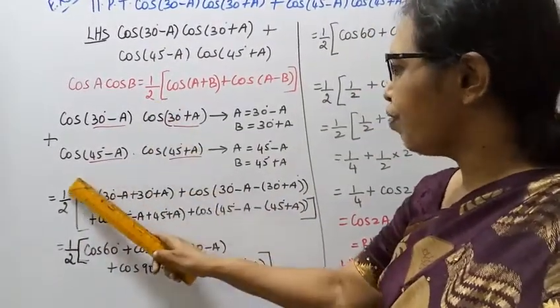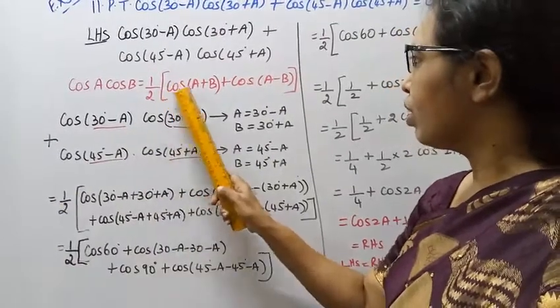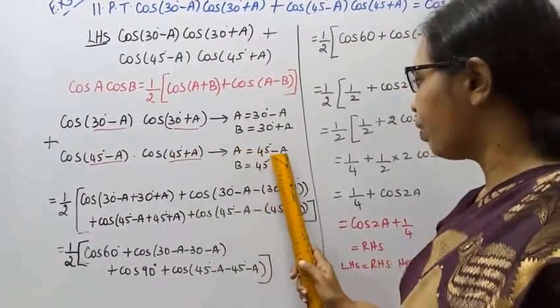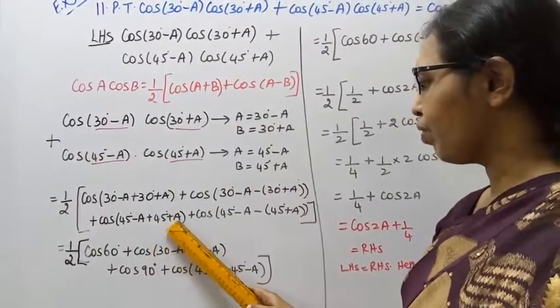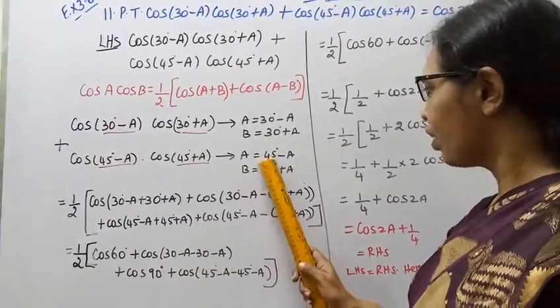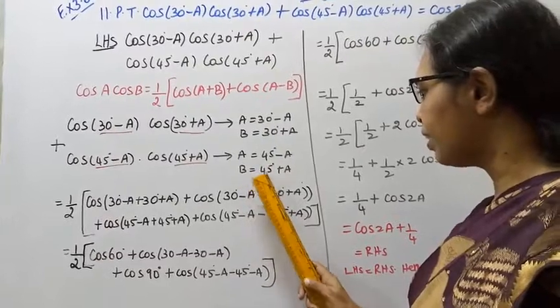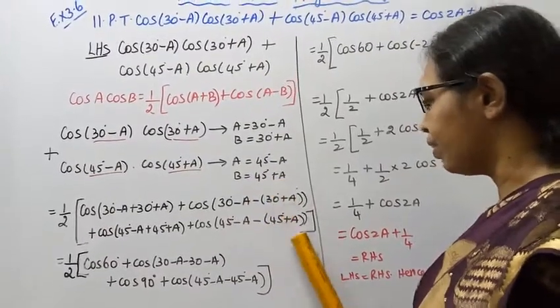Cos, half is common. Cos A plus B, 45 minus A plus 45 plus A, plus 45 minus A minus of 45 plus A.